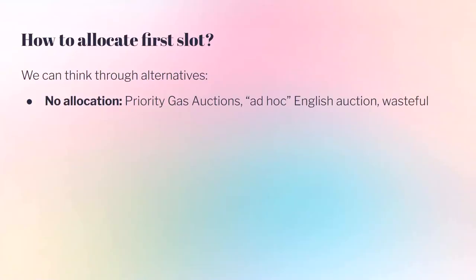Let me go through a few options for allocating the first slot. The first is no mechanism — just let it play out, leading to priority gas auctions. Block proposers find it incentive compatible to choose decreasing gas price ordering. The result is ad hoc English auctions that are fairly wasteful: competing bots create a lot of traffic in the mempool, the winner makes away with the money, and a dozen losing bots still have transactions included — paying fees but doing nothing useful — clogging the chain with unnecessary data.